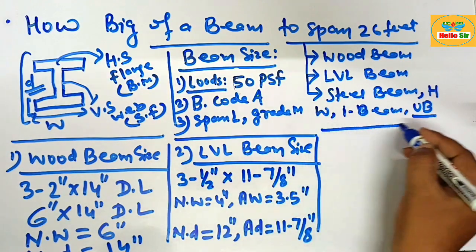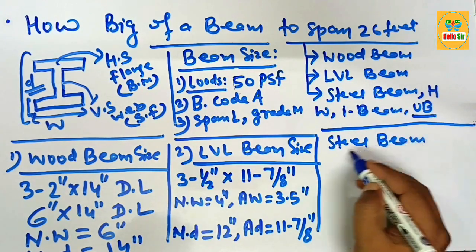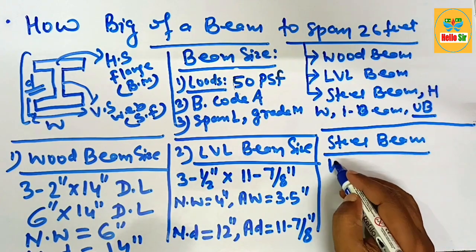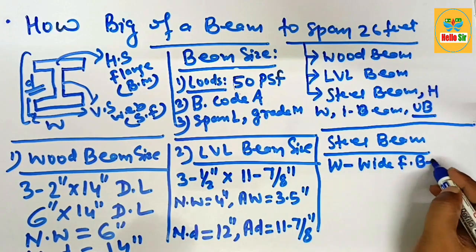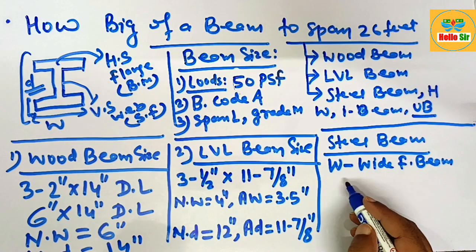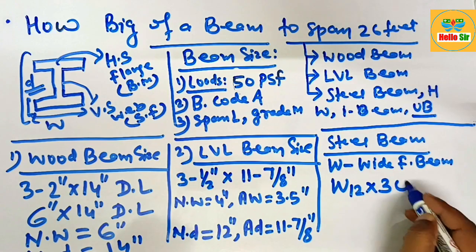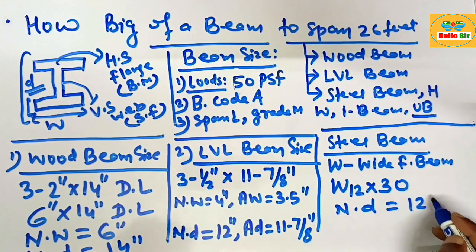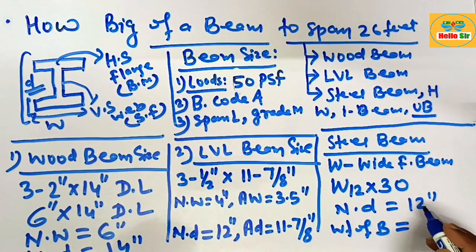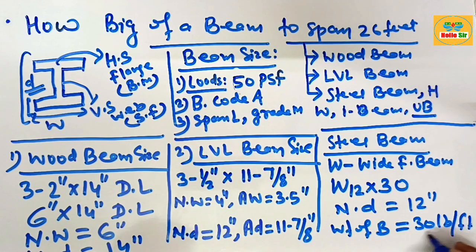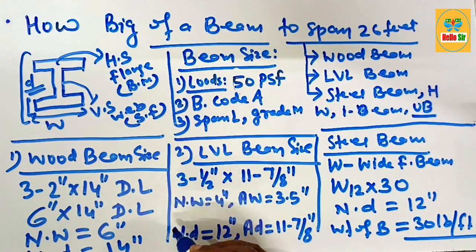For the steel beam size required to span 26 feet, it is represented as a W-beam — an American wide flange beam. The steel beam size should be W12×30, where the nominal depth is 12 inches and the weight is 30 pounds per foot. These are the three types of beam structures required to span a 26-foot distance.